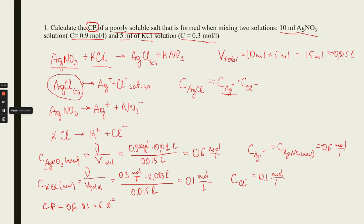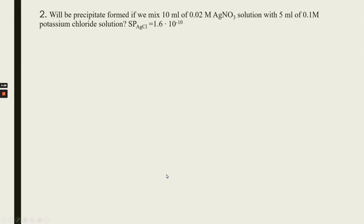There are no units for concentration products, because it depends on the number of cations and anions in the low-soluble salt. In some cases we multiply not just concentrations but concentrations raised to the power of stoichiometric coefficients, so there are no stable units for the concentration product.